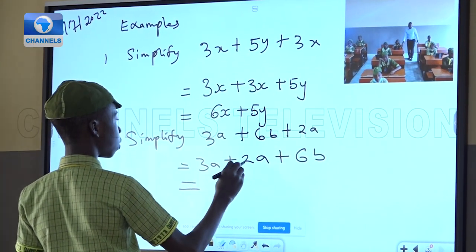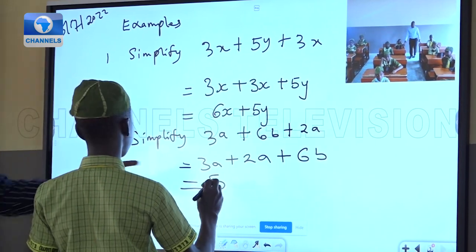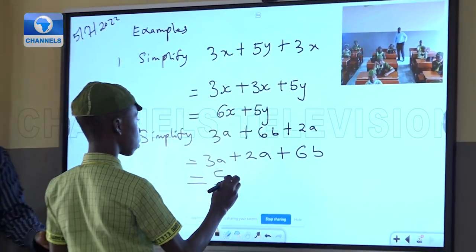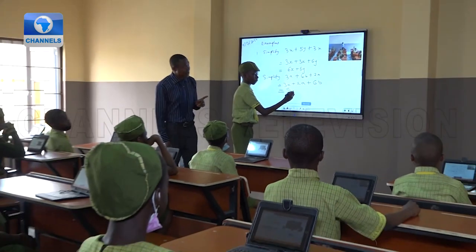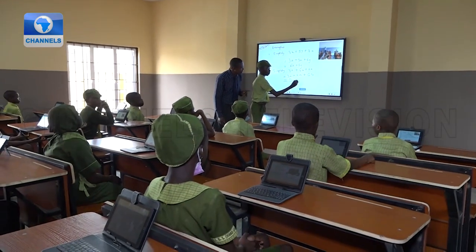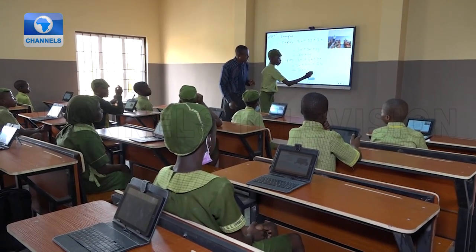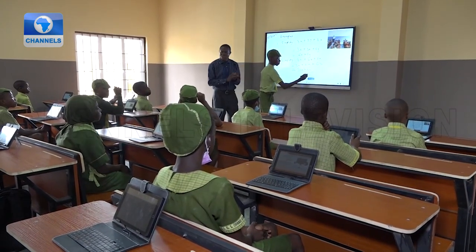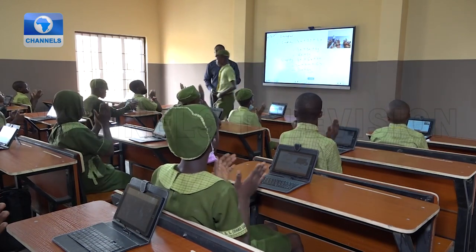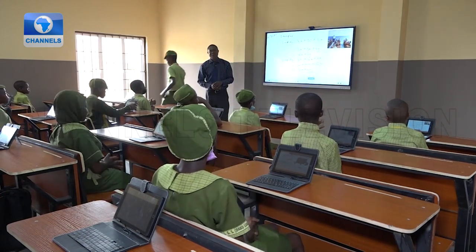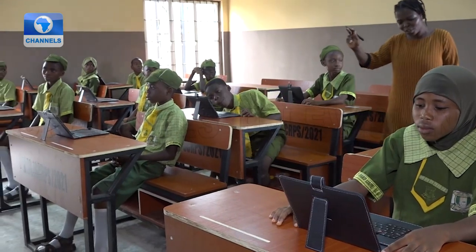In one classroom session, a student works through an algebra problem — 3a plus 2a — arriving at 5a plus 6b. But providing an environment that supports the technology is key, hence learning spaces like this.